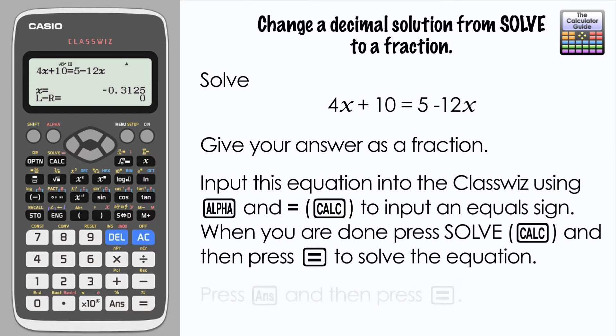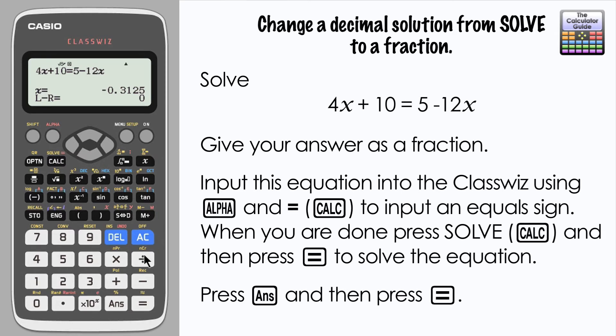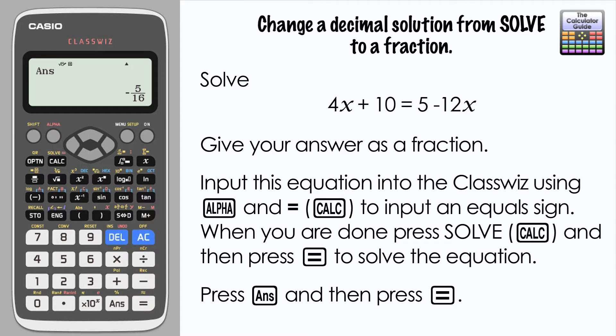And the simplest way that I found is to press ANS and then press equals, and the calculator has expressed that now as an exact fraction: negative 5 over 16. So if it is possible for the calculator to express your result as a fraction, then this is the way that you're able to get the calculator to display it.